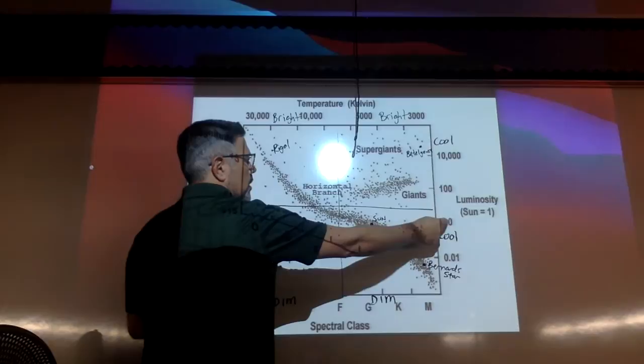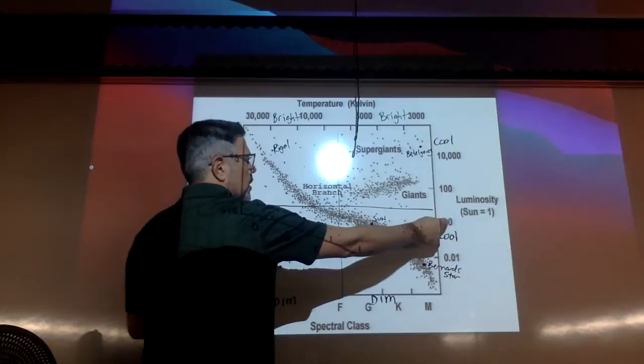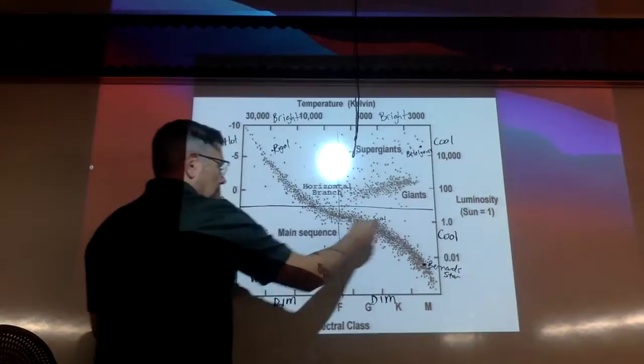So, for example, we have our sun here. And you can find it by finding 1.0 because that's what we measure the sun at. And just come on over and you know it's in the main sequence. So there it is. And we also know that it's in G-class because of its temperature,